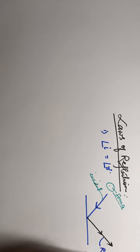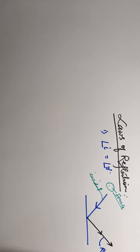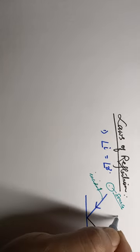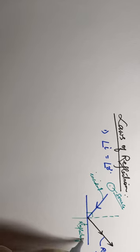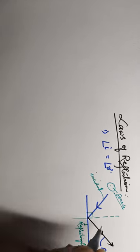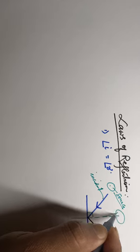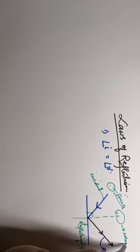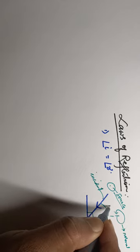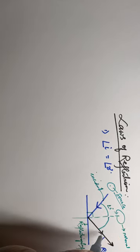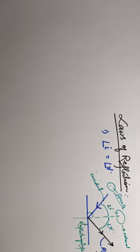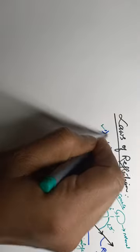The ray of light which bounces back from the reflecting surface is called the reflected ray of light. If you draw an imaginary line perpendicular to the reflecting surface, that line is called the normal. The angle between the incident ray and the normal is called the angle of incidence, and the angle between the reflected ray and the normal is called the angle of reflection.